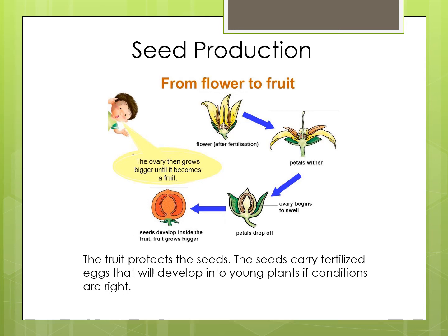Seed production. What is seed production? This diagram shows how seed production occurs after fertilization takes place. Look at the diagram. The petals and the stamens of the flowers start to wither. These will eventually drop off.